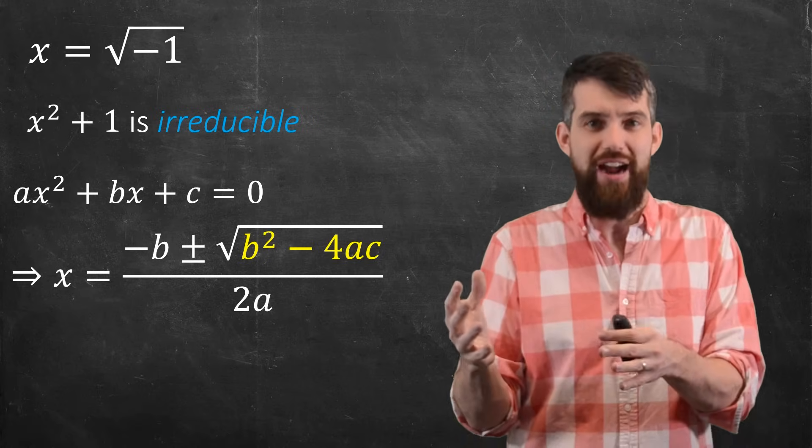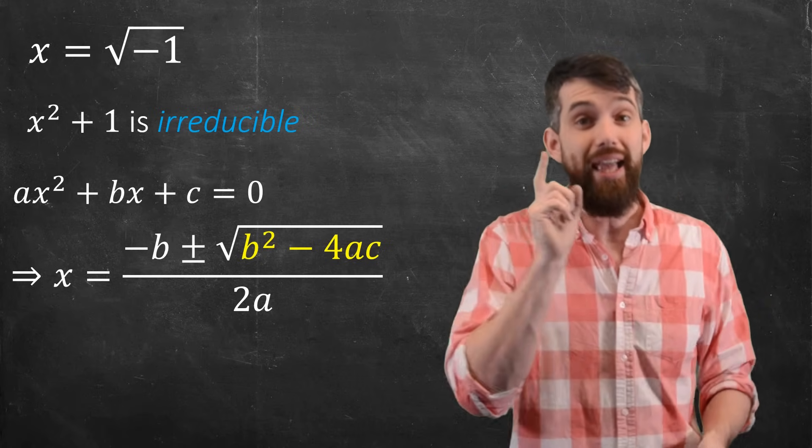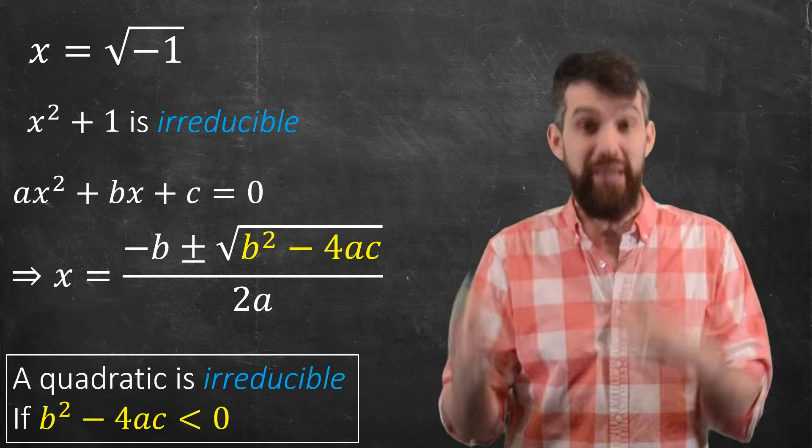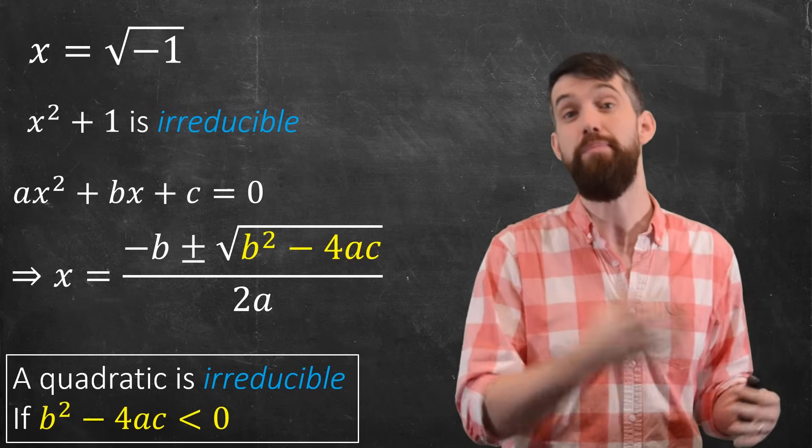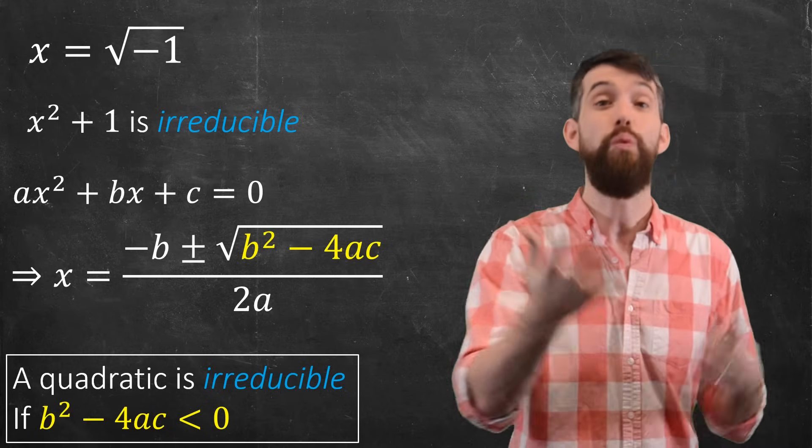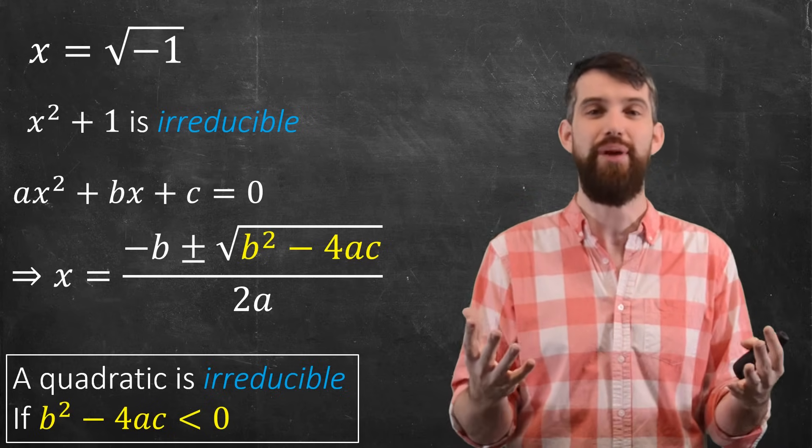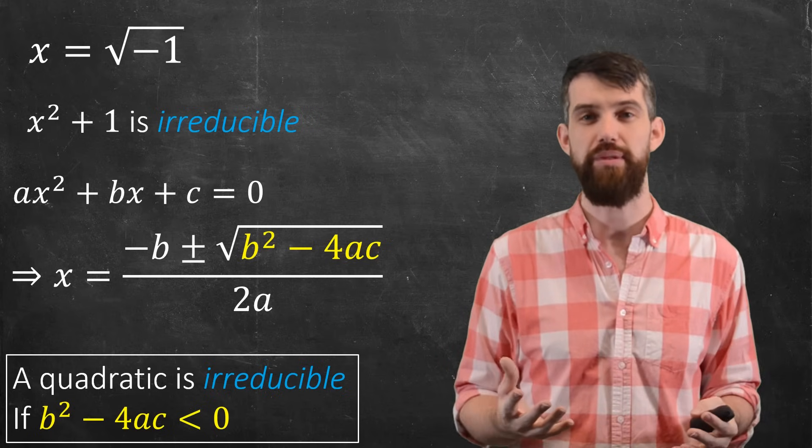I can only find two factors and therefore will only be able to factor it as a product of linear terms if we have that b squared minus 4ac being positive. So when that's not the case, when it's negative, we call it irreducible. There's nothing we can do to these quadratics. I cannot break them up as a product of linear terms.